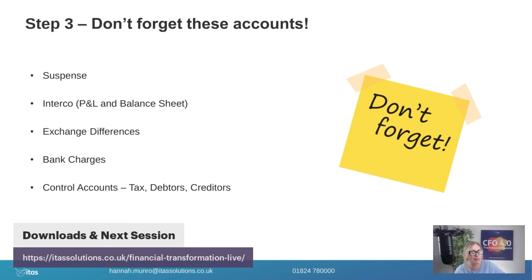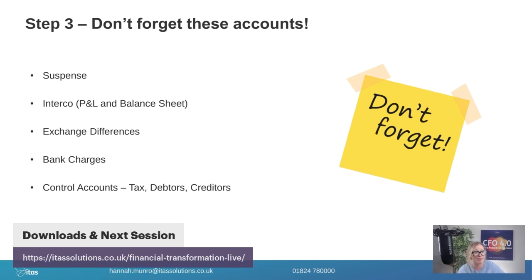A few items people often forget during the build: include a suspense account — there will be miss-postings, especially when testing new logic. Remember your intercompany entries on both sides — most people are good on the balance sheet but sometimes forget intercompany P&L sales. Exchange differences and bank charges are really common ones to forget. Think about how you're managing bank accounts — ideally a different nominal per bank account. And your basic control accounts: are you going to have different debtors and creditors accounts, and if so, how do you default that logic?